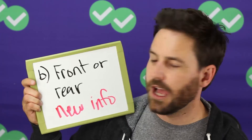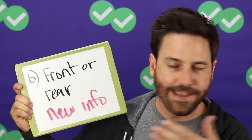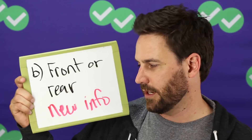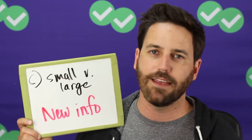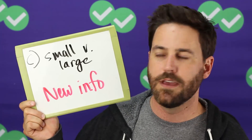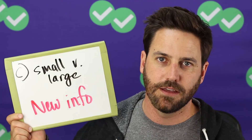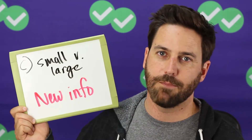Answer choice B talks about the fish being in the front or rear of the group. There's nothing in the passage that talks about the placement of the fish in the schooling group, so this is new information and wrong. Answer choice C talks about whether it's a small group or a large group. Again, the passage doesn't go into the size of the schooling group. If you look at the fourth paragraph, there's nothing about how big the school is in terms of protecting them from predators. New information — wrong.